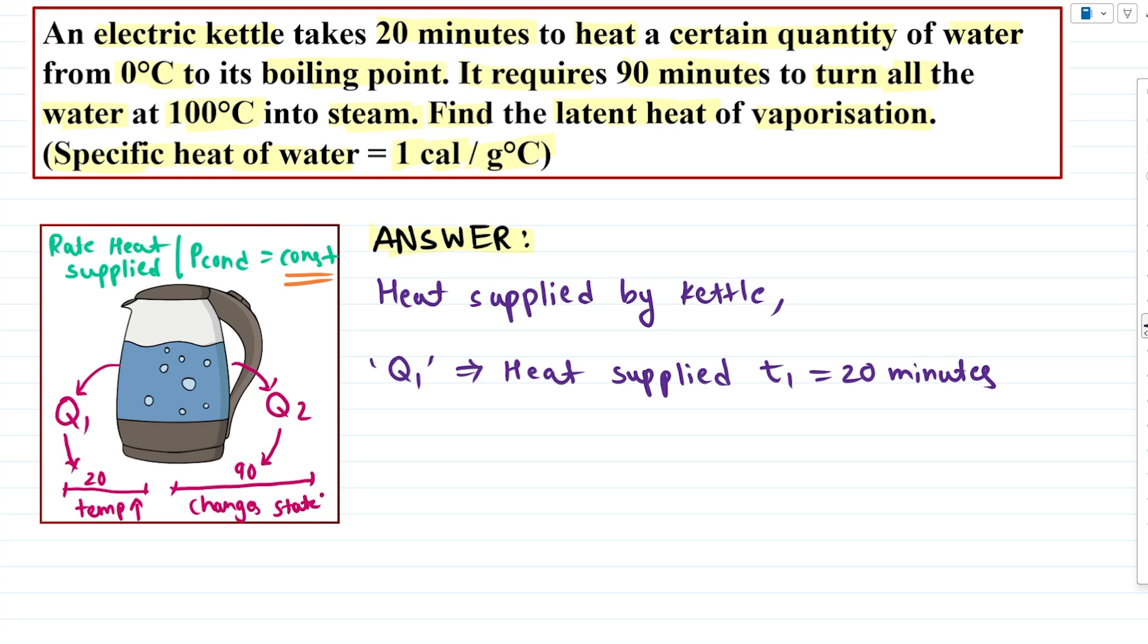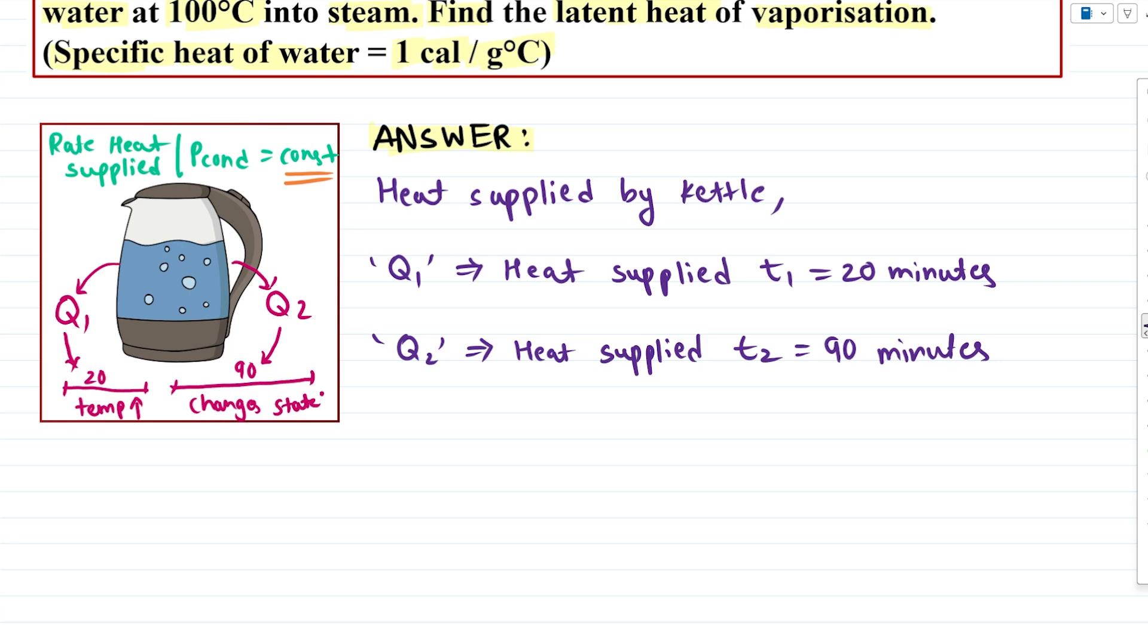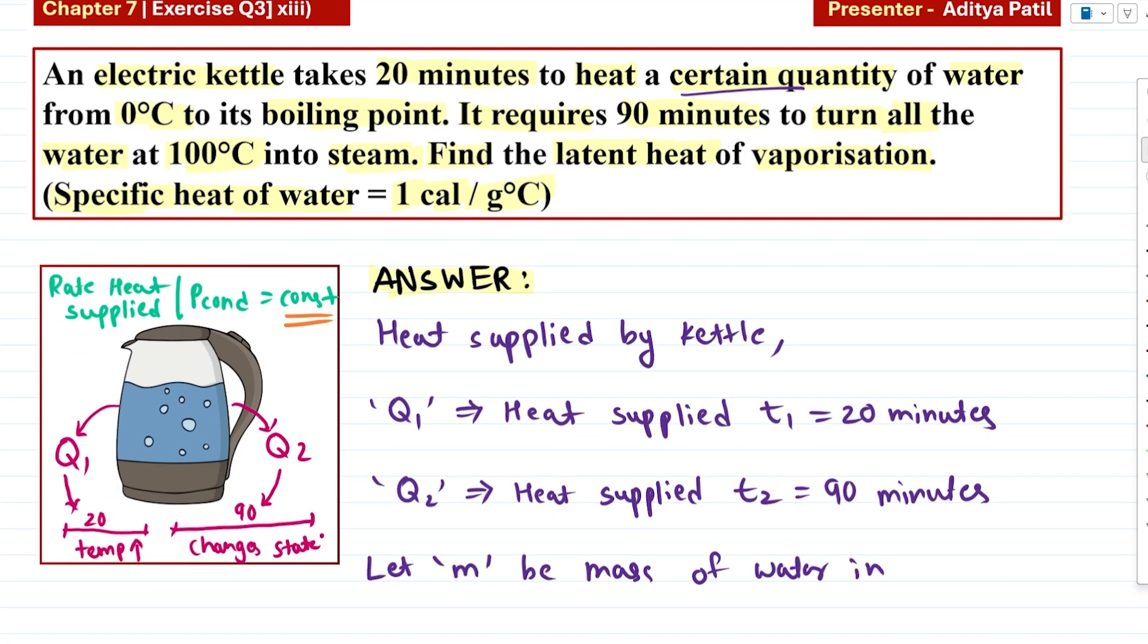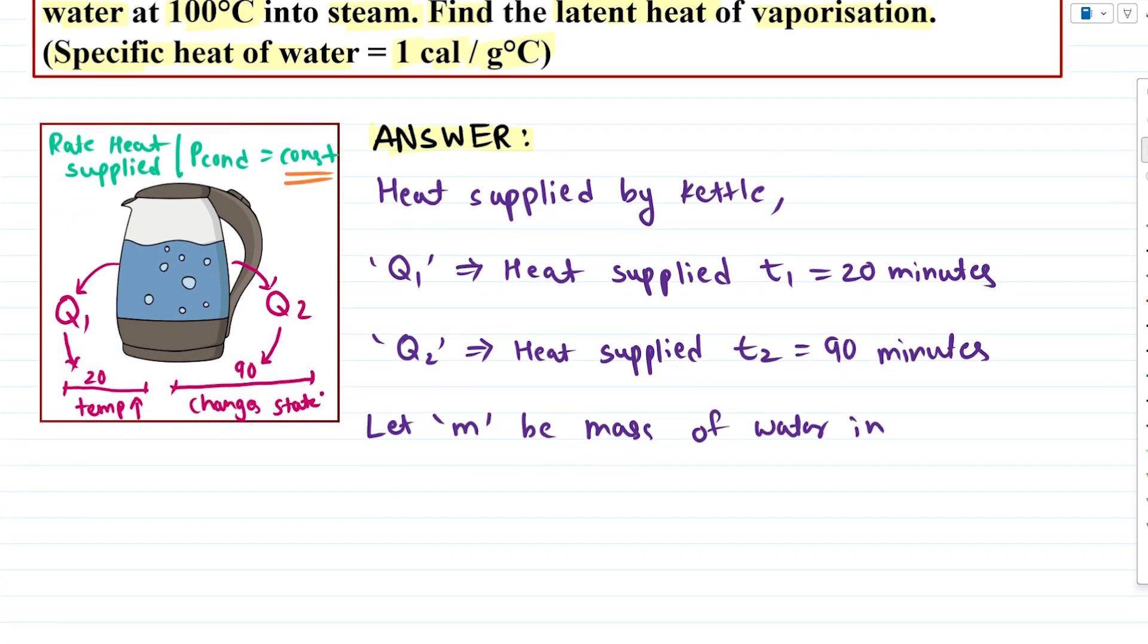And we have defined Q2 as the amount of heat which was supplied for a time of 90 minutes. So we will call this time T2 and this is 90 minutes. In addition, let small m be the mass of water in the kettle, because we have a certain quantity of water. That certain quantity can be anything, so we have assumed a variable mass of water in our kettle.